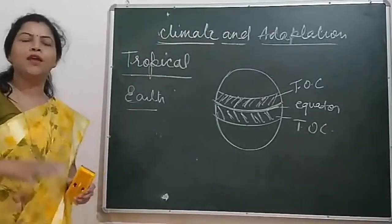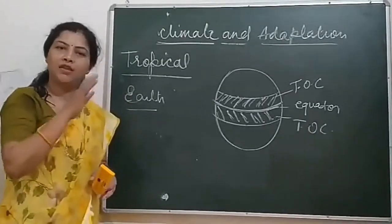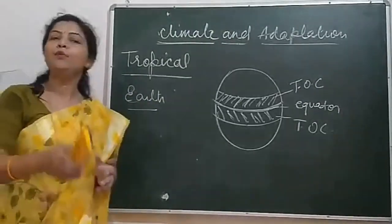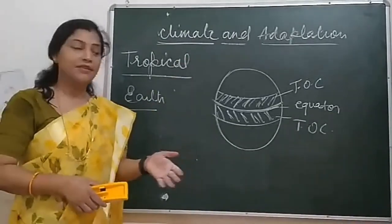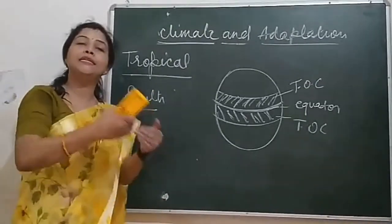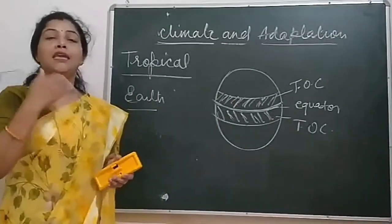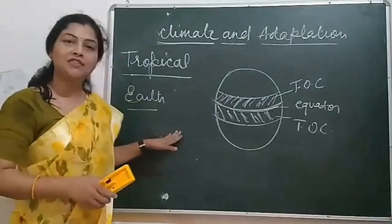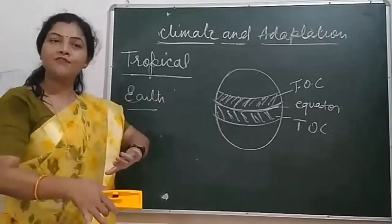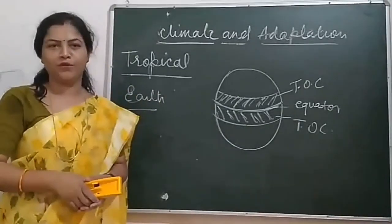So I hope you have understood the different climatic conditions on Earth and the three major parts according to climatic conditions: tropical, desert, and polar regions. In my next video, I will make you understand what kind of animals are found in those regions — in polar, desert, and tropical regions — and how they have adapted special features to live and survive in those particular areas. Thank you all.